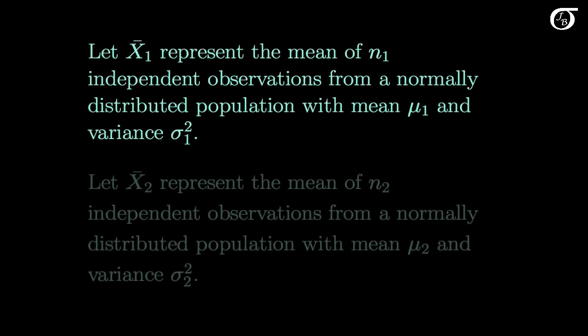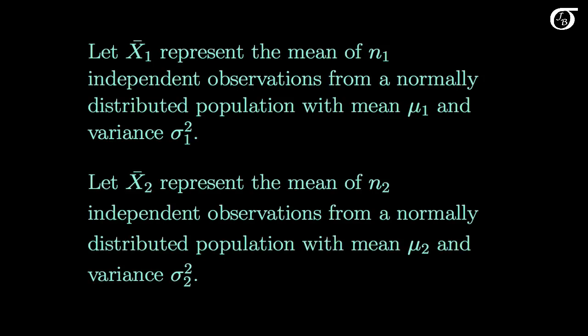Let X1 bar represent the mean of N1 independent observations from a normally distributed population with mean mu1 and variance sigma1 squared, and similarly for X2 bar. We are also going to let X1 bar and X2 bar be independent, which would be the case if we are sampling independently from the two different populations.